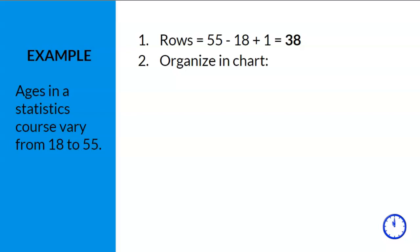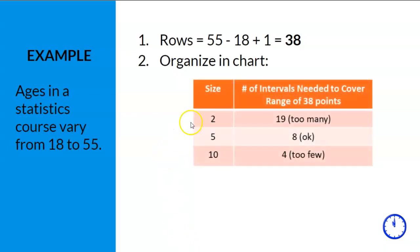Step 2 is to decide whether we will select an interval size of 2, 5, or 10. Let's create a simple table to keep us organized. We need to know the number of intervals needed to cover a range of 38 rows, so we divide 38 by each interval size. 38 divided by 2 gives us 19 intervals, which according to rule number 1 is too many. 38 divided by 5 gives us 8 intervals, which meets rule number 1. 38 divided by 10 gives us only 4 intervals, which is too few. So we will select an interval size of 5.